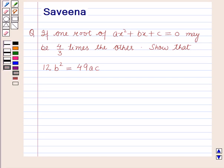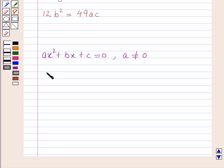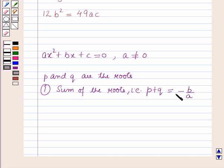Before starting the solution of this question, we should know some results. The standard form of a quadratic equation is ax² + bx + c = 0, where a is not equal to 0, and a, b, c are constants. Now let p and q be the roots of this equation. Then the sum of the roots, that is p + q, is equal to −b/a, which means the sum of the roots equals minus the coefficient of x over the coefficient of x² in the given equation.